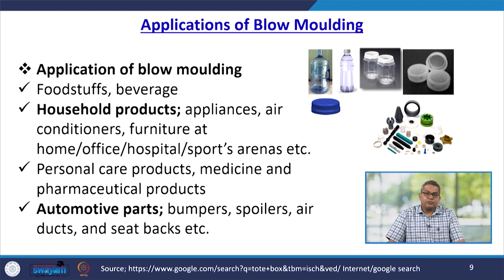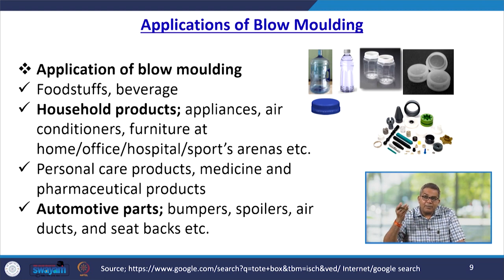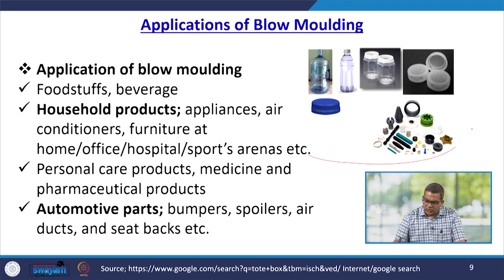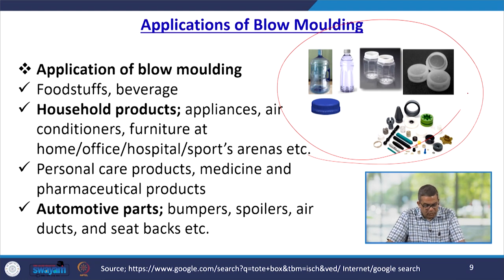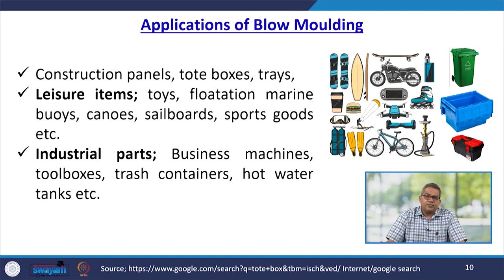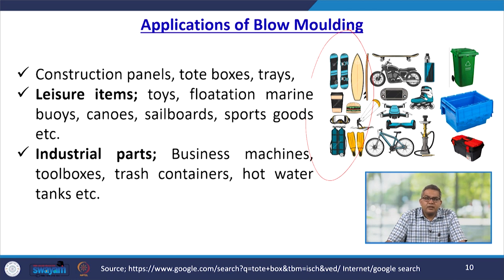The various applications of blow moulding include: food and beverages; household products; appliances such as air conditioners and furniture for home, office, hospital, and sports arenas; personal care products; medicines and pharmaceutical products; automotive parts like bumpers, spoilers, air ducts, and seat bags; construction panels, tote boxes, trays; leisure items like toys, flotation devices, marine buoys, canoes, sailboats, and sports goods.